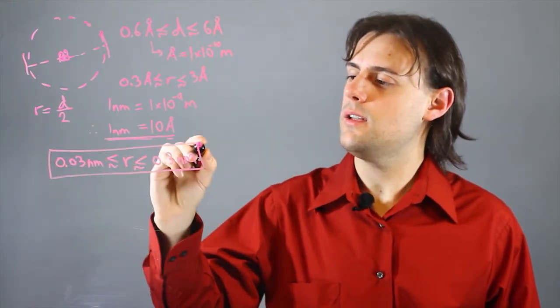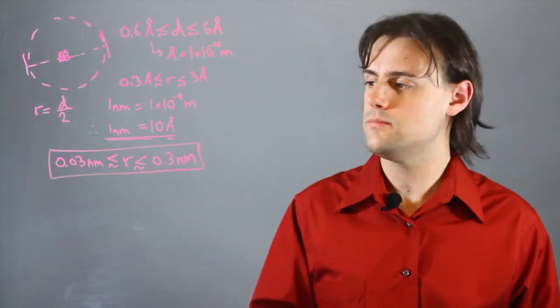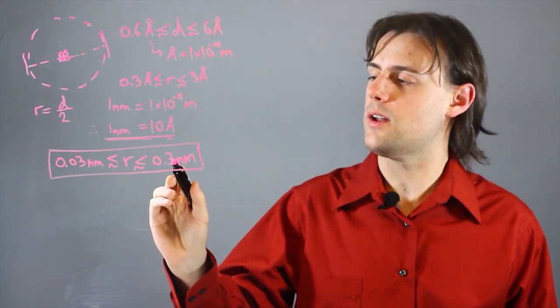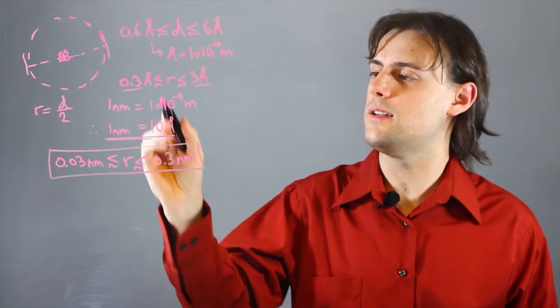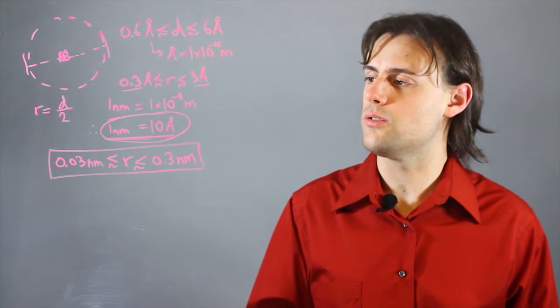So the radius of a particular element, of a given atom, will range from 0.03 nanometers to 0.3 nanometers, where I've simply divided the previous bounds by 10 due to this relationship.